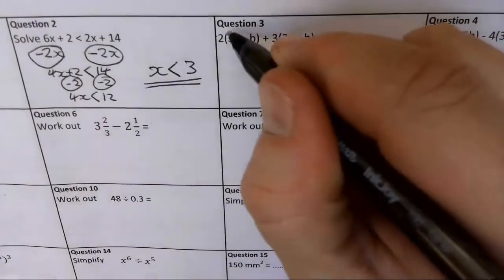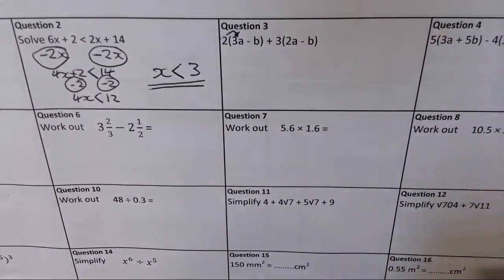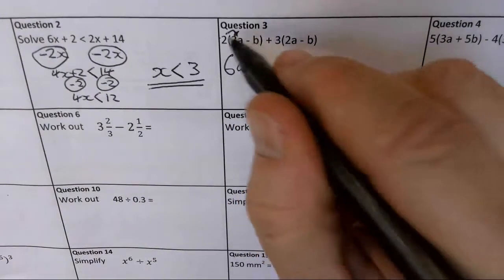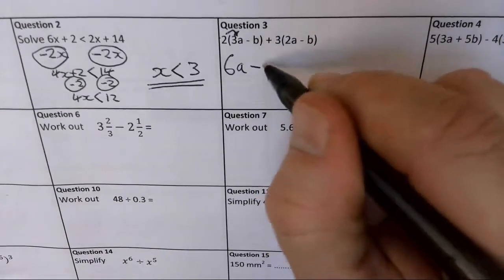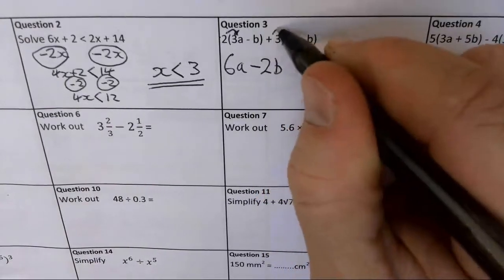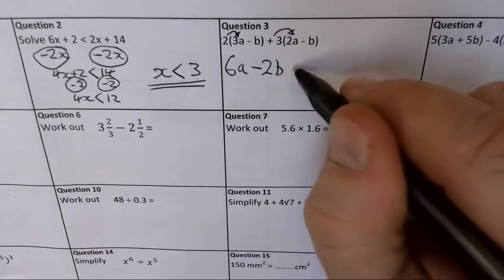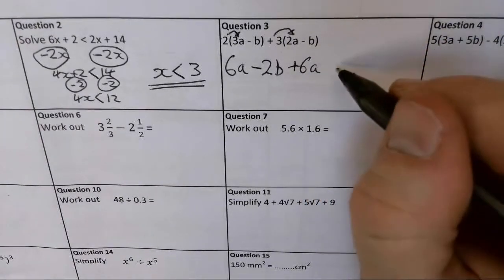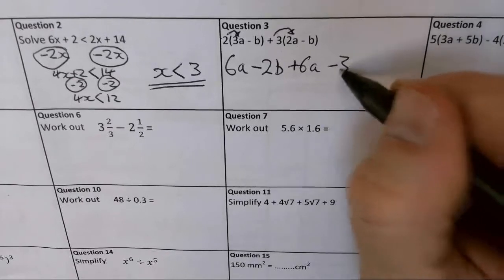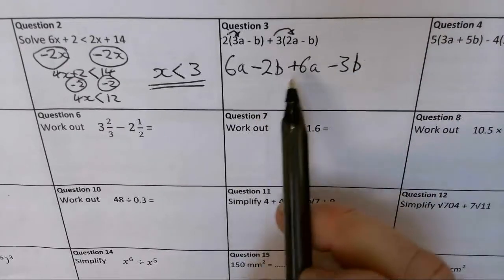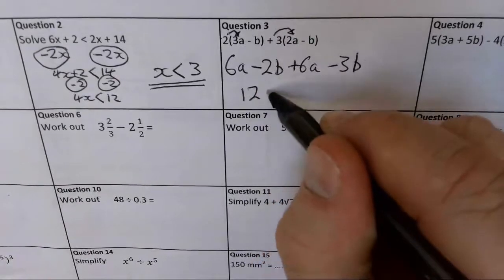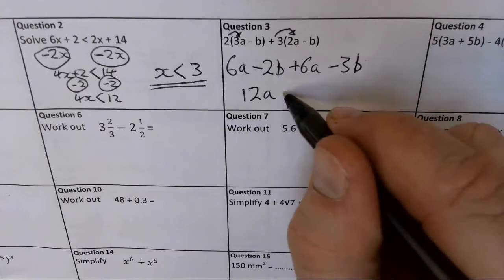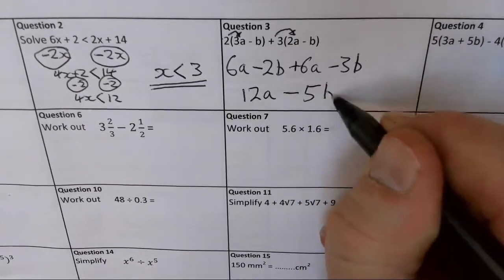For question 3, we've got multiplying out brackets, so be careful with the negatives. 2 times 3a gives 6a, 2 times negative b gives minus 2b, plus 3 times 2a gives plus 6a, and 3 times negative b gives minus 3b. Collecting like terms: 6a and another 6a gives 12a, and minus 2b take away another 3b gives minus 5b.